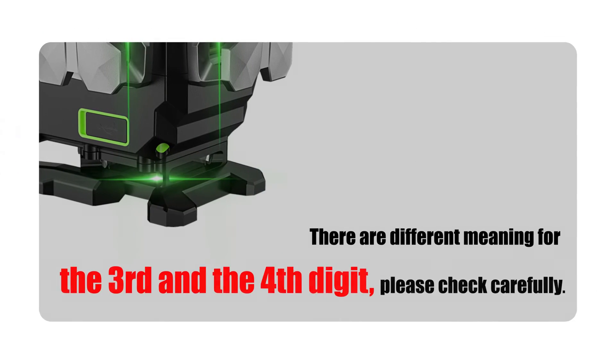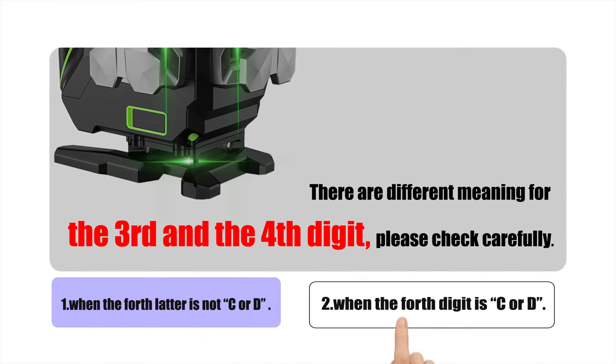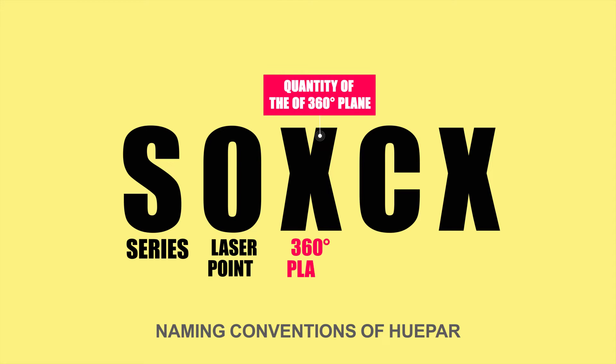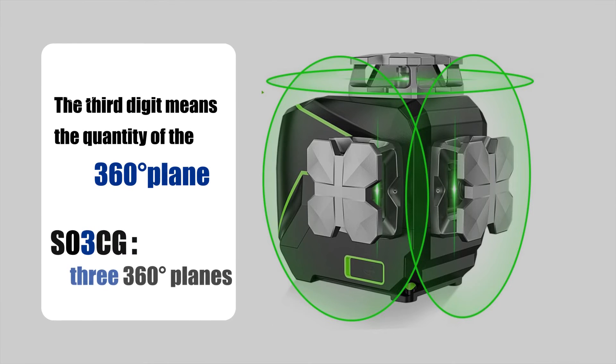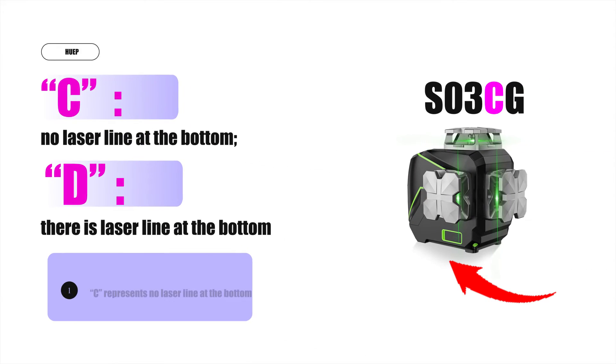The third digit means the quantity of 360 degrees plane when the fourth digit is C or D. For example, BO3CG, SO3CG all have three 360 degree planes. And C represents no laser line at the bottom, and D represents that there is a laser line at the bottom.